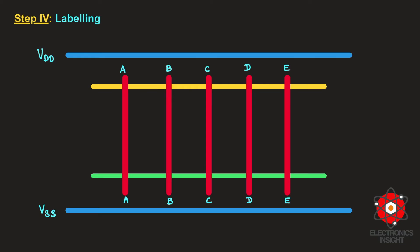The common Euler path is A→B, B→C, C→D, D→E, so that is the order in which we arrange the polysilicon red layers. For example, if the common Euler path were C→D→A→B→E, we would arrange the polysilicon layers in that order instead. Since our path is A, B, C, D, E, I have arranged the polysilicon gate layers in that same order before proceeding to connect the drain terminals of NMOS and PMOS.